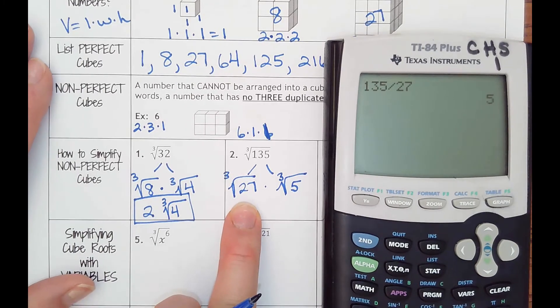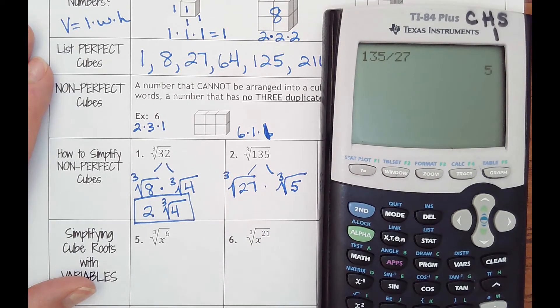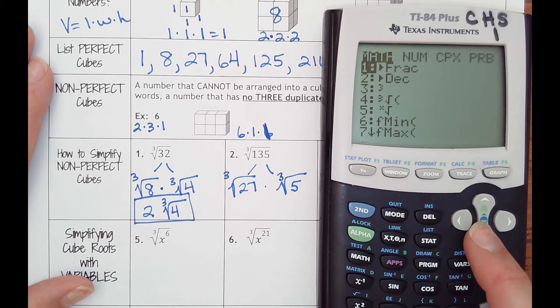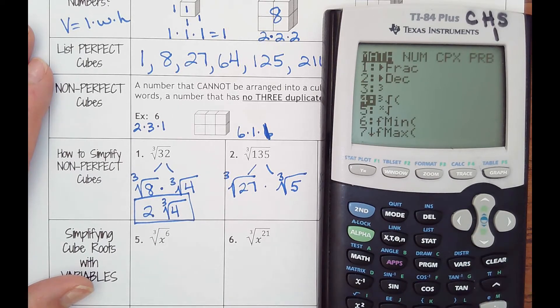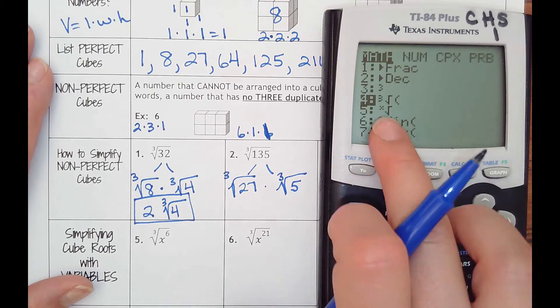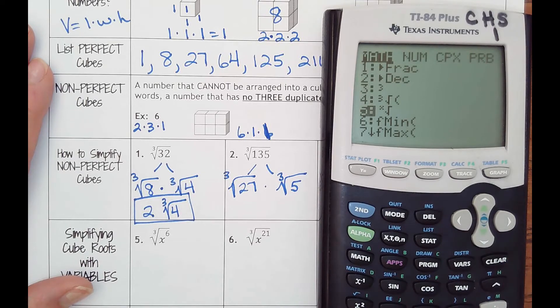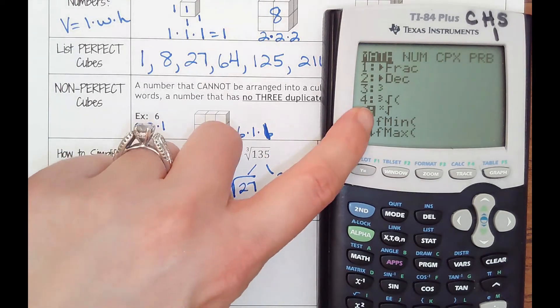So split this into two cubes. Cube root of 27, cube root of five. If you're not sure what the cube root 27 is, you have two options. Hit math, and then if you go down to option number four, or if you hit a four it'll select that option. See how that little three is in front of the radical? That is a cube root symbol.